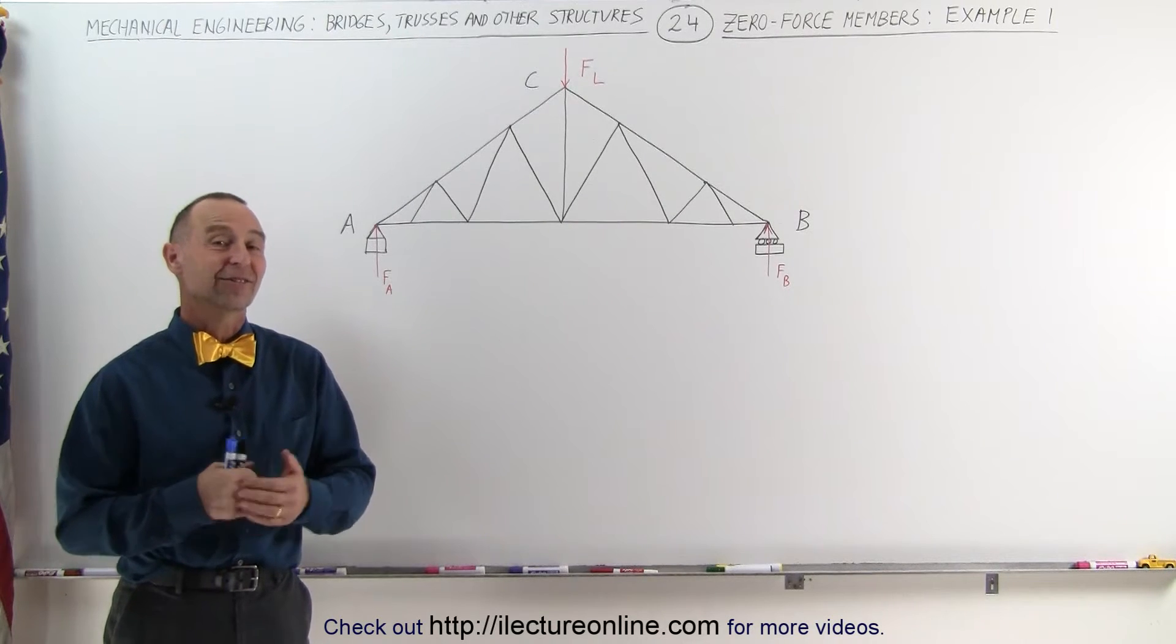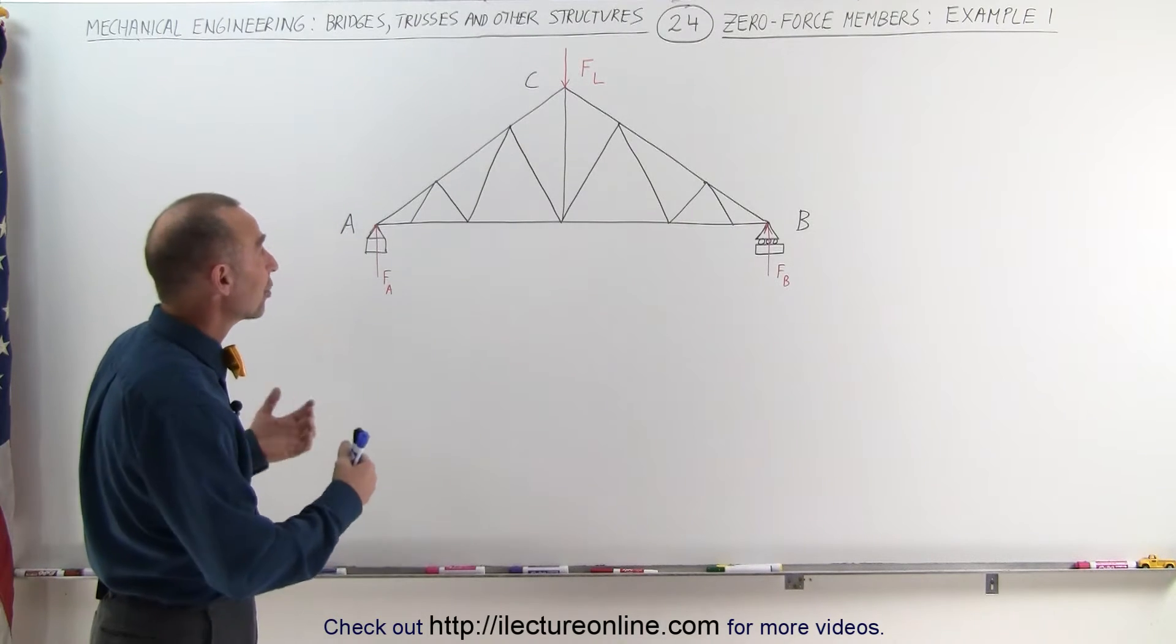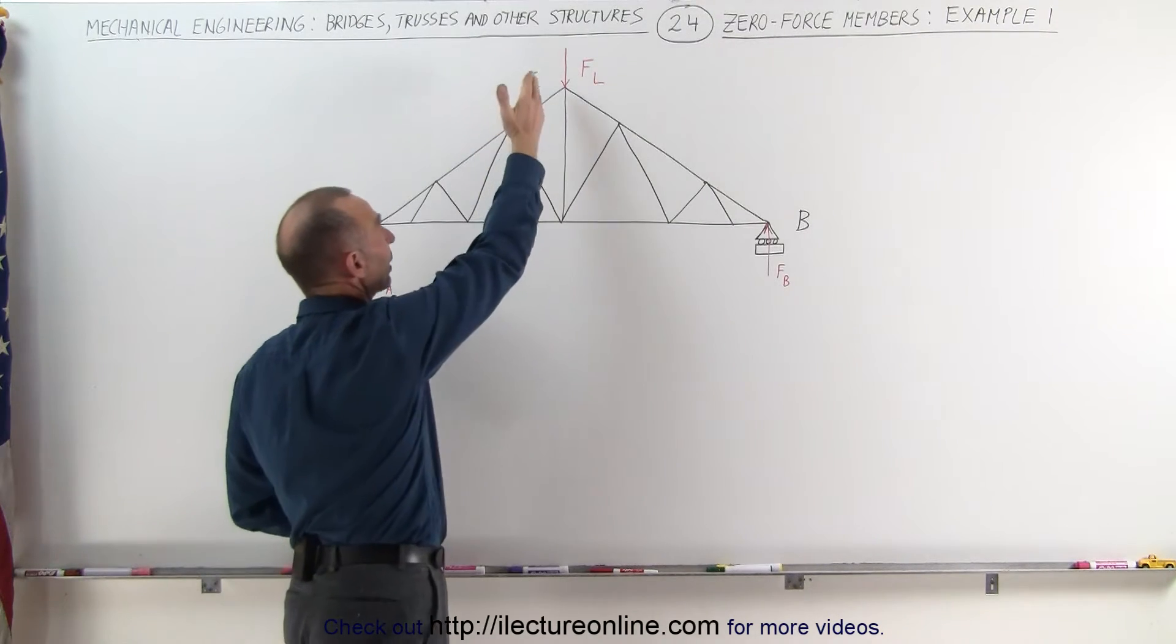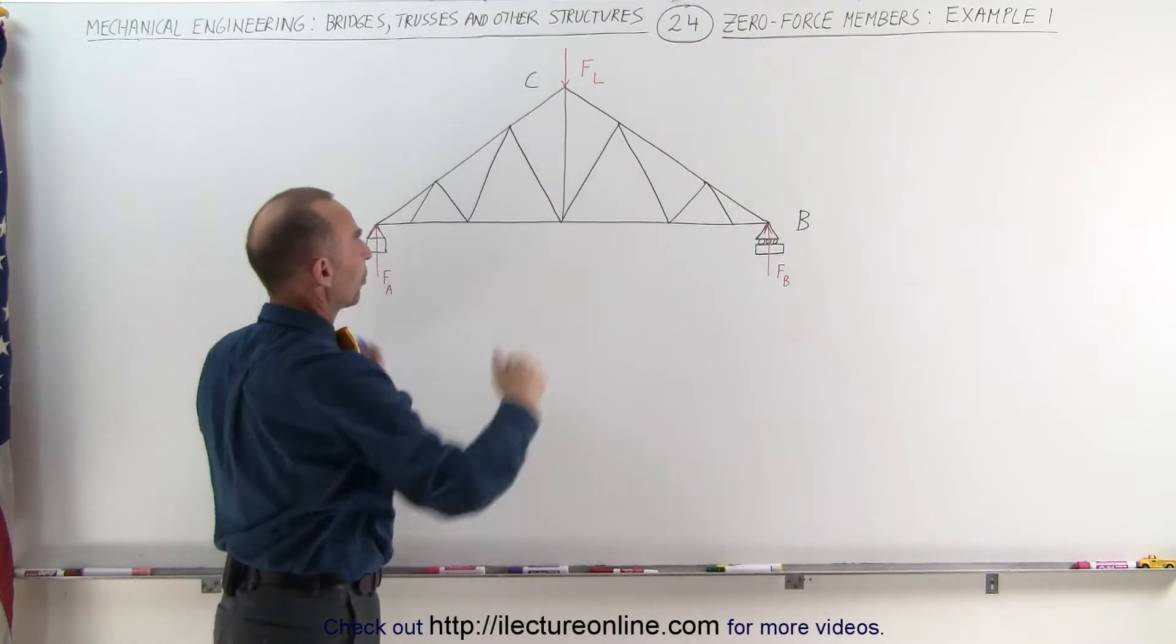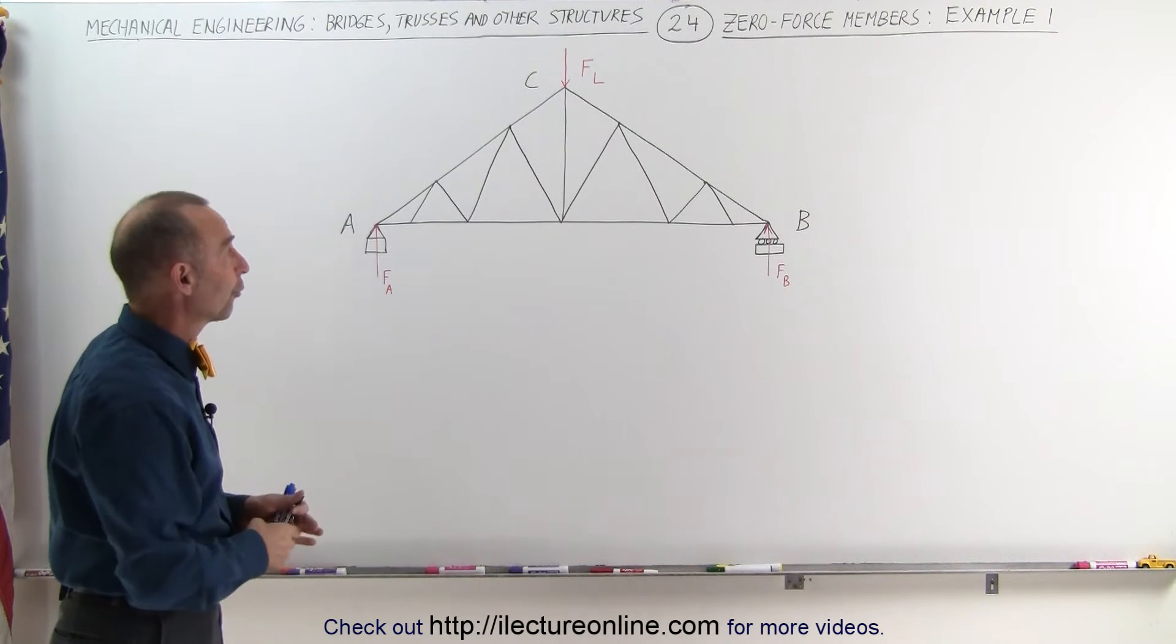Welcome to I Lecture Online. Now let's see if we can apply the rules to an example like this. Here we have a truss, we have a load at the very top, we have the two supports at A and B. Which of these members, if any, are zero force members?